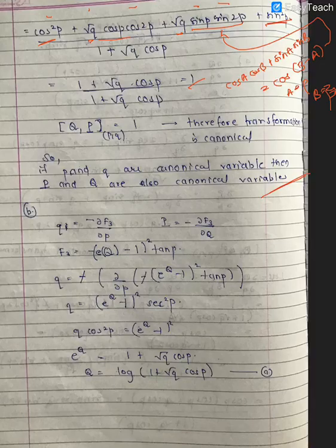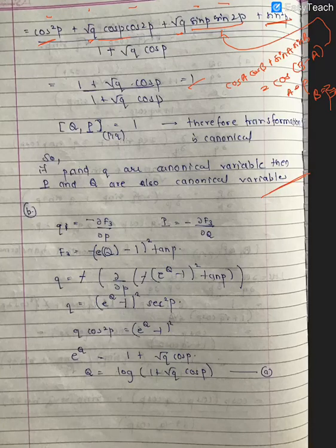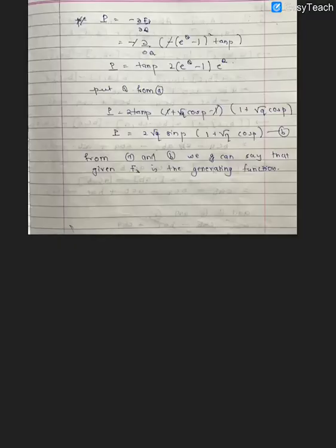Now let's go to the second question. The question asks us to show that the function that generates this transformation is F3, where F3 = −(e^q − 1)² · tan(p).